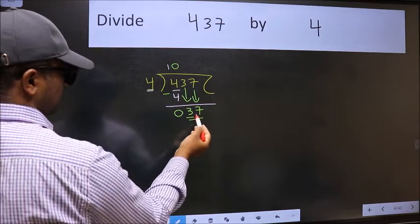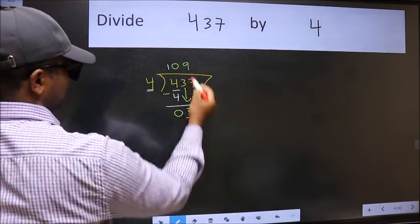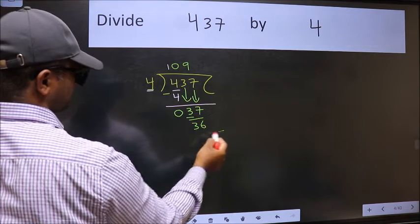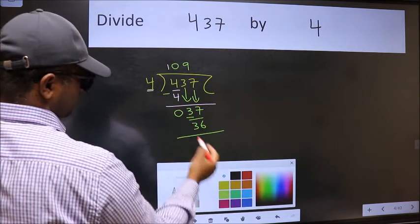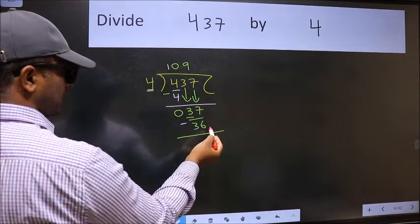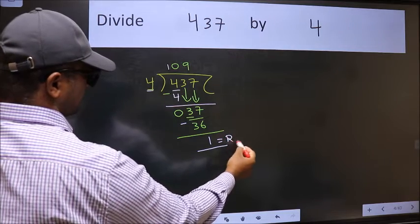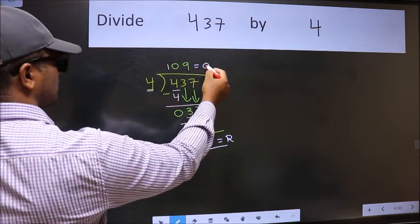Now, 37. A number close to 37 in the 4 table is 4 nines 36. Now we should subtract. We get 1. No more numbers to bring down, so we stop here. This is our remainder and this is our quotient.